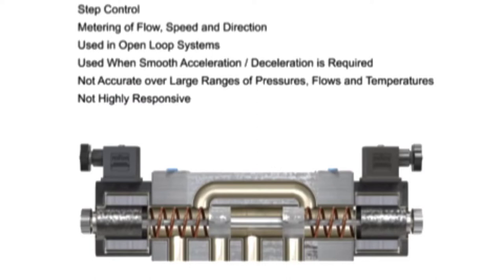Proportional valves offer a variety of machine cycles, which can safely be operated at greater speeds and result in improved machine cycle times and production rates.